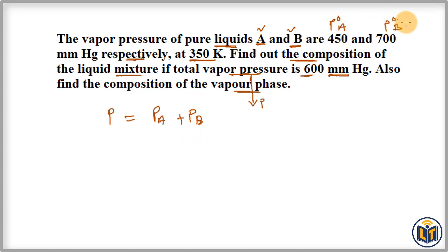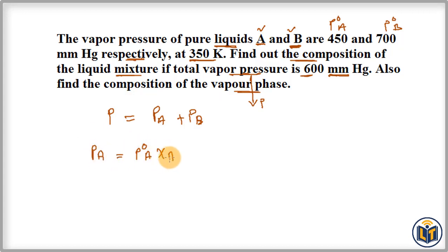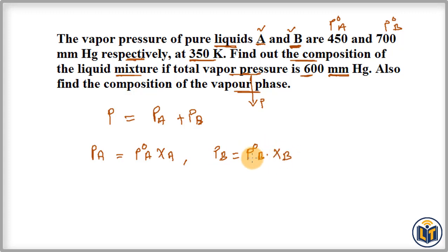We have P°A and P°B — the vapor pressures of the individual pure liquids. Raoult's law states that the vapor pressure of a component in solution equals the vapor pressure of that component in its pure state multiplied by its mole fraction. So PA = P°A · XA, and similarly PB = P°B · XB.